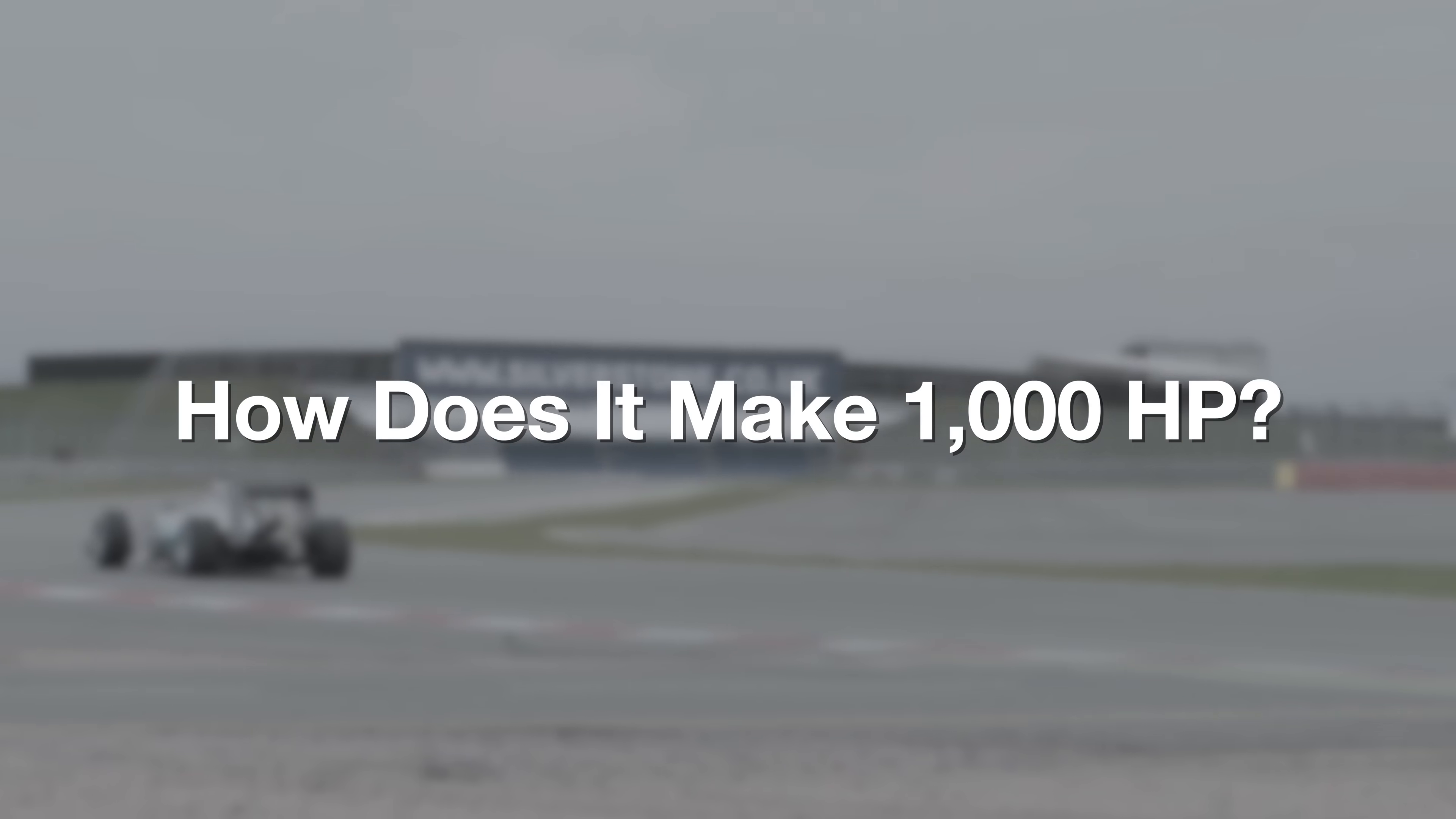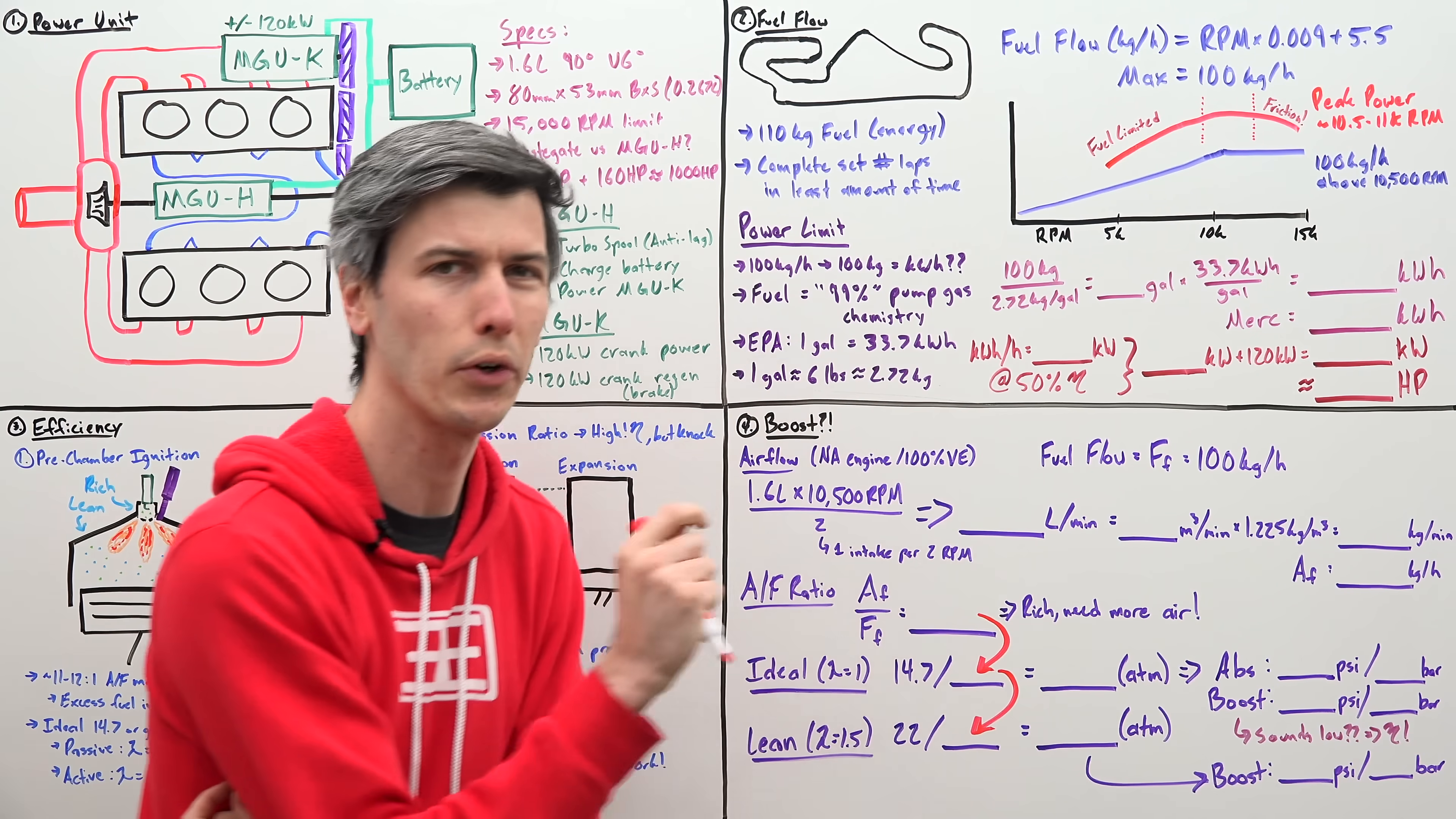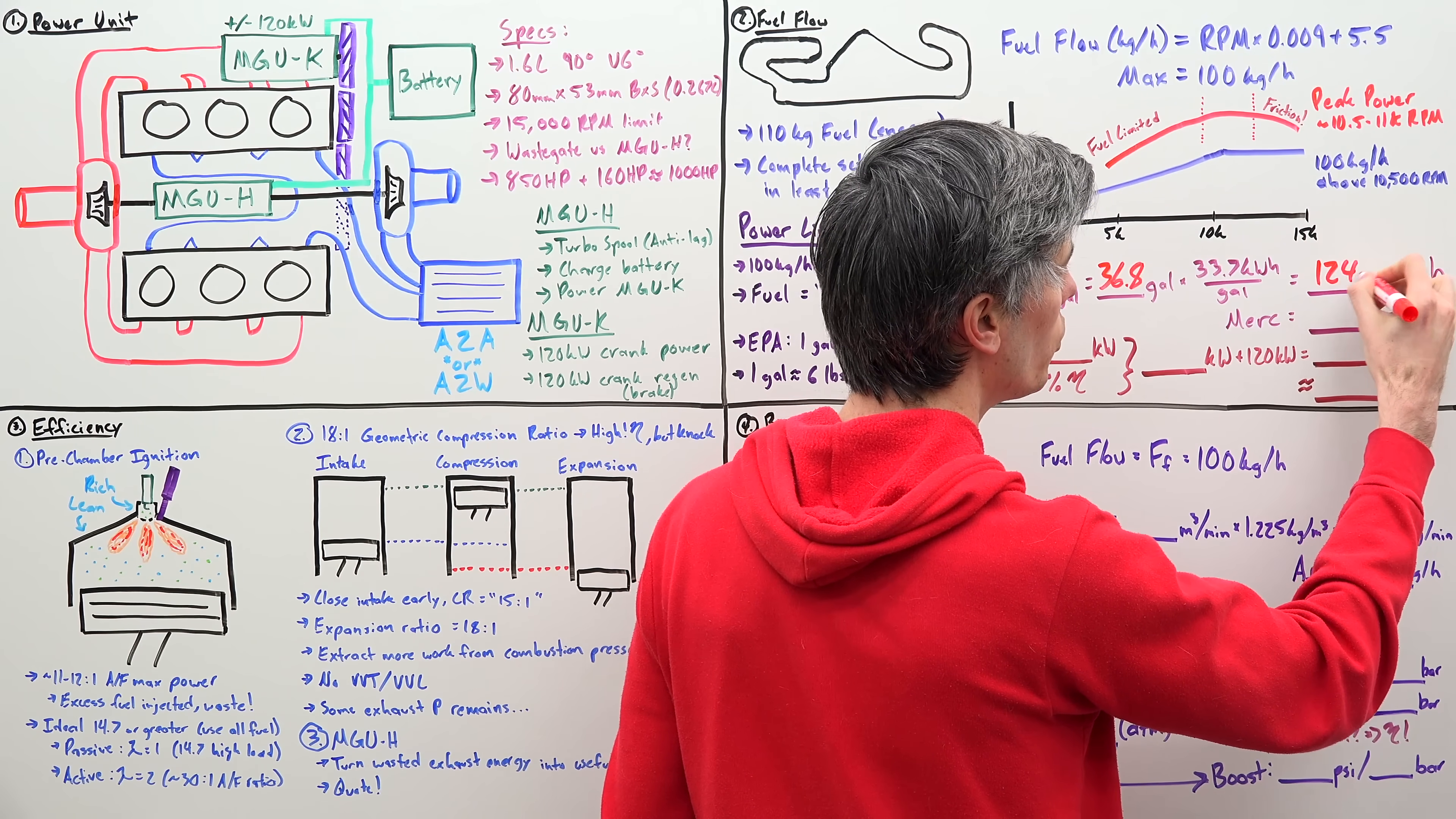Okay. So we still don't understand how we're able to achieve a thousand horsepower. So what do we know? Well, we know that our power is ultimately limited by fuel. We can never exceed 100 kilograms of fuel per hour. So how much energy is in 100 kilograms of fuel? Well, we know from teams, they state that the fuel used in Formula One is 99% the same as the pump gas that we're already used to. So the EPA states that one gallon of gas is equivalent to 33.7 kilowatt hours. One gallon of gas weighs about six pounds or 2.72 kilograms. So we can take 100 kilograms, which is our limit, divide that by 2.72. And that means we have about 36.8 total gallons of gas.